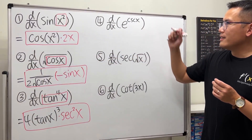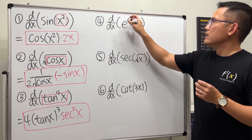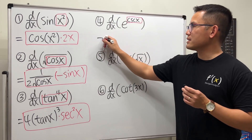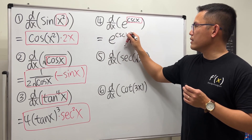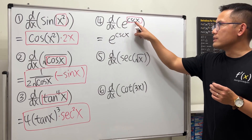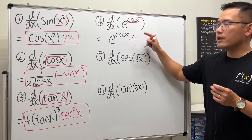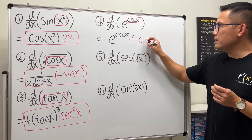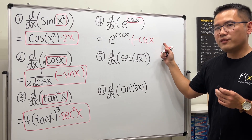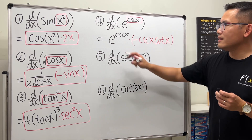For number four, we differentiate e to the cosecant x. Since the derivative of e to the box is just e to the box, the e to the cosecant x stays the same. Then we multiply by the derivative of cosecant x. Cosecant is a co-function, so it has a negative derivative. The derivative of cosecant repeats cosecant, and its best friend cotangent also appears: negative cosecant x times cotangent x.